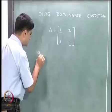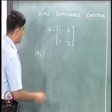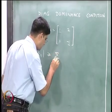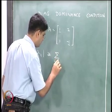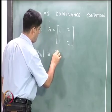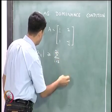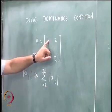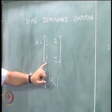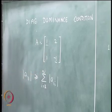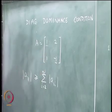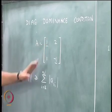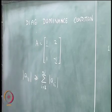The diagonal dominance condition requires that the absolute value of A11 should be greater than or equal to the summation from i=2 to n of |A1i|. In this particular case, the absolute value of 1 is indeed greater than or equal to the sum of the absolute values of the non-diagonal elements, so this diagonal element is dominant when looking at the first column.